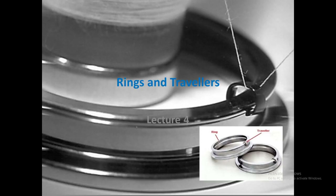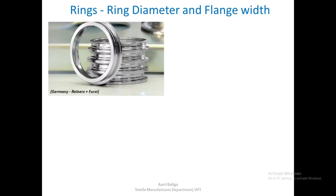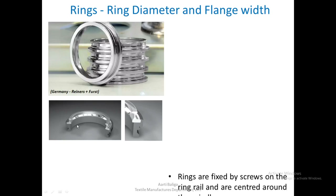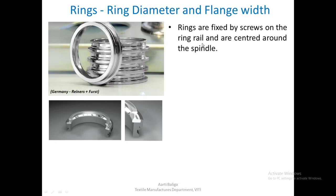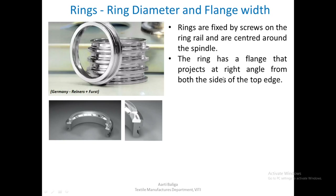Today we shall study the ring and travelers. The parameters for a ring are the ring diameter and flange width. This is the ring and this is the cross section of the ring — it looks like this. If this ring were cut in half, this is the cross section. Rings are fixed by screws on the ring rail and are centered around the spindle. The ring has a flange that projects at right angles from both sides of the top edge.